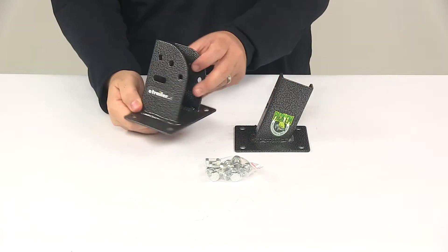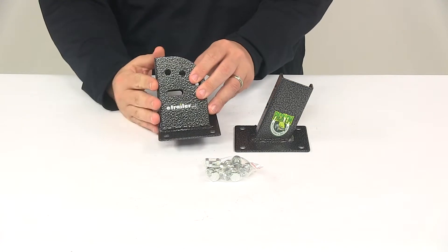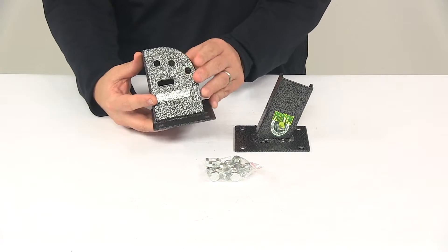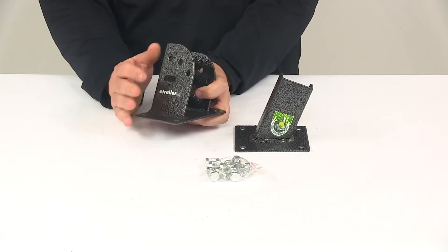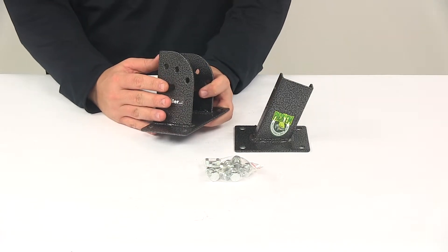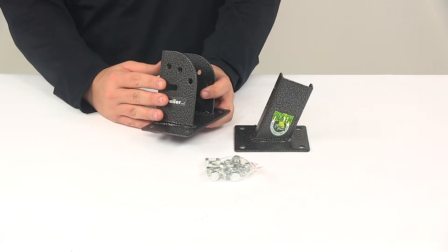This right here is your top bracket. This could mount on a seat plate, ROPS device, engine deck, or a steel fender on the riding mowers. If mounting on a walk behind, it could go on the gas tank, perch, engine deck, or even the dashboard.